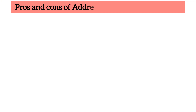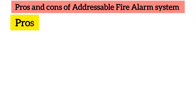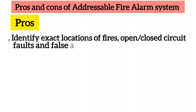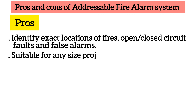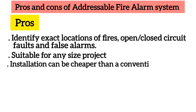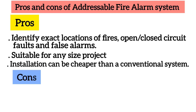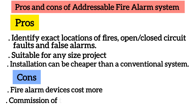Pros and cons of addressable fire alarm system. Pros: 1. Identify exact locations of fires, open and closed-circuit faults, and false alarms. 2. Suitable for any size project. 3. Installation can be cheaper than a conventional system. Cons: 1. Fire alarm devices cost more. 2. Commission of the system takes longer.